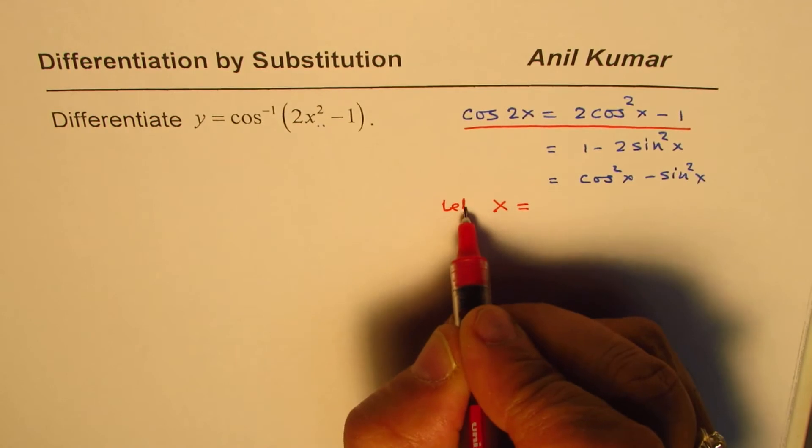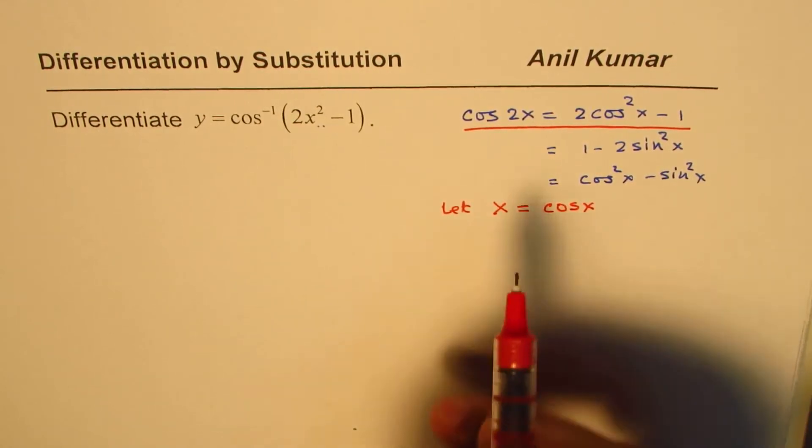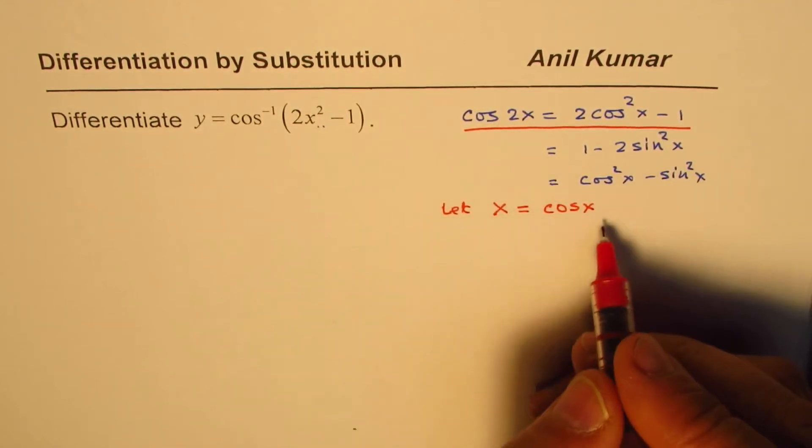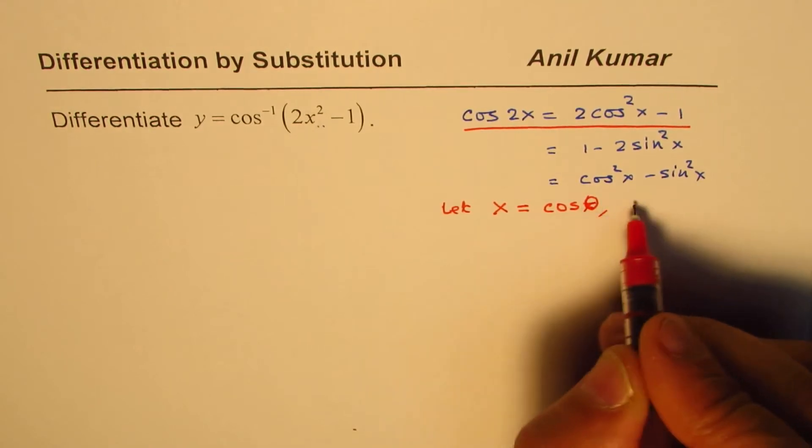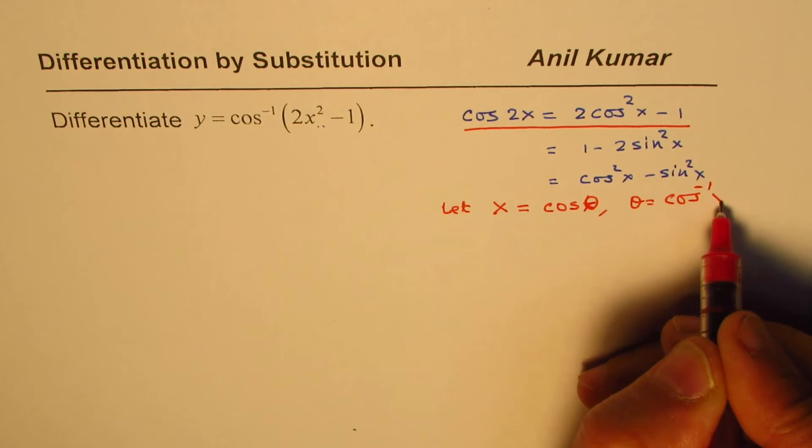So if I substitute, let x equals cos theta. In that case, we could write the inside term as cos 2 theta. So in that case, theta will equal cos inverse x.